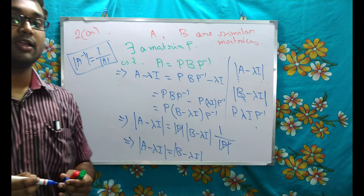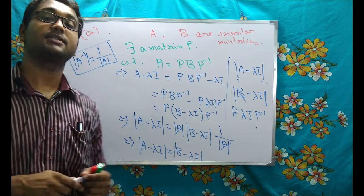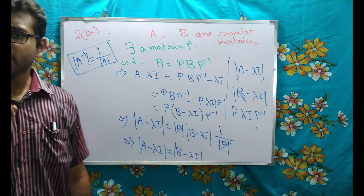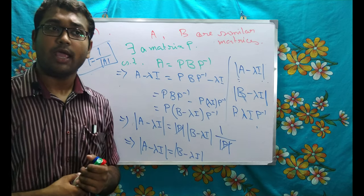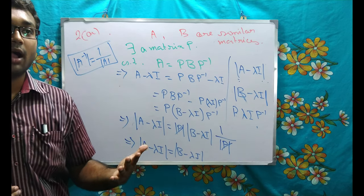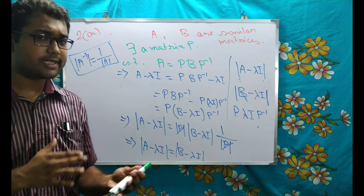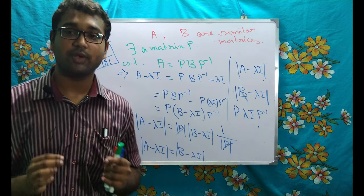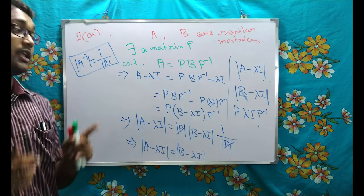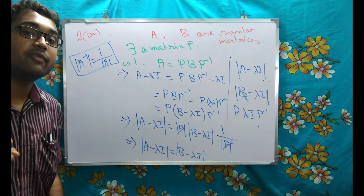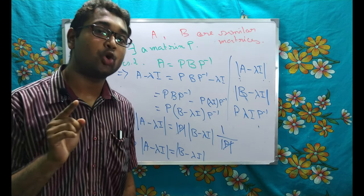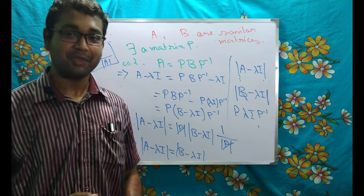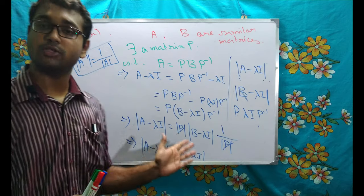This means A and B have the same characteristic equation. When they have the same characteristic equation, they will give us the same characteristic roots — which are the eigenvalues. So this is proved.